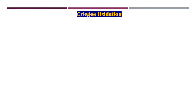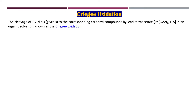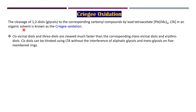Hi and welcome to Saraswak Classes. This is Dr. Udu Sarkar, and in continuation with the lecture series on oxidation reagents, we are discussing today Criegee's oxidation. This reagent is used for cleavage of 1,2-diols, also known as glycols, to the corresponding carbonyl compounds by lead tetraacetate, where the oxidation state on lead is +4, used in an organic solvent. The whole process is known as Criegee's oxidation.